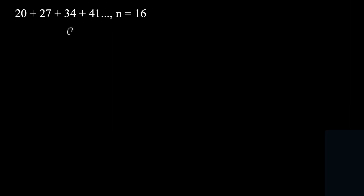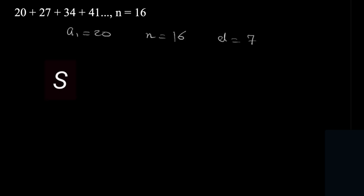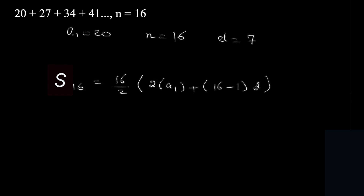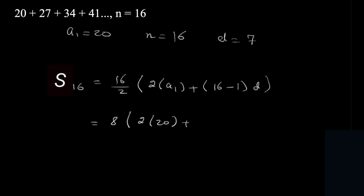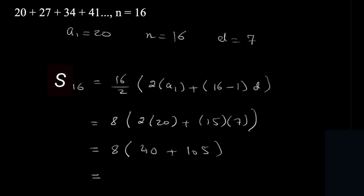In this question, a1 is 20, n is 16, and the common difference is 27 minus 20 which is 7. So S16 equals 16 over 2 into 2 times 20 plus (16 minus 1) times 7. That's 8 into 40 plus 15 times 7 which is 105, giving 8 into 145, and the final answer is 1160.